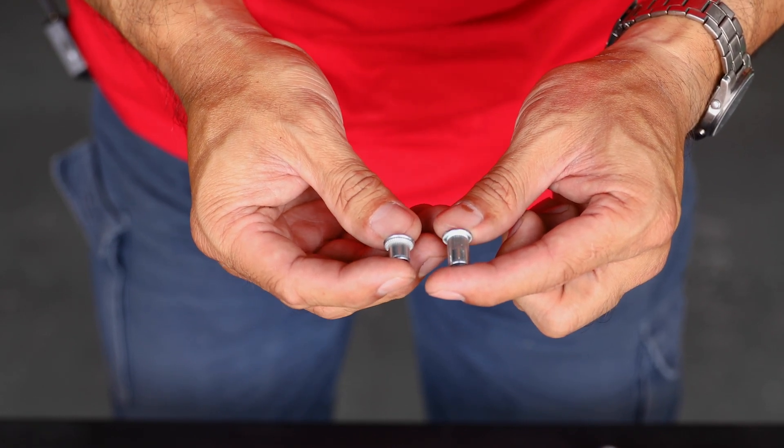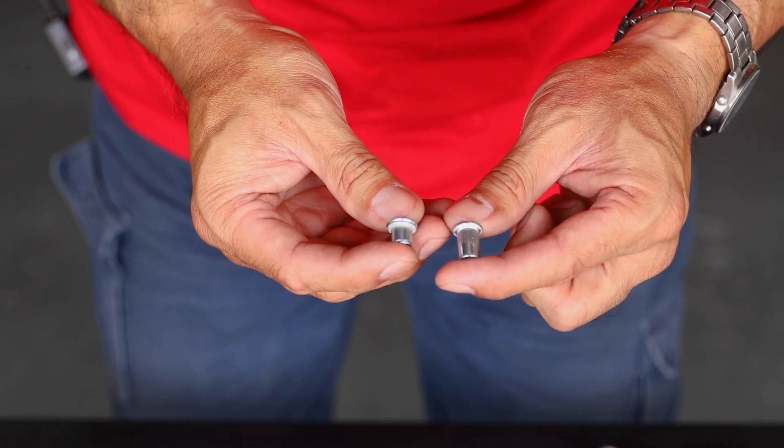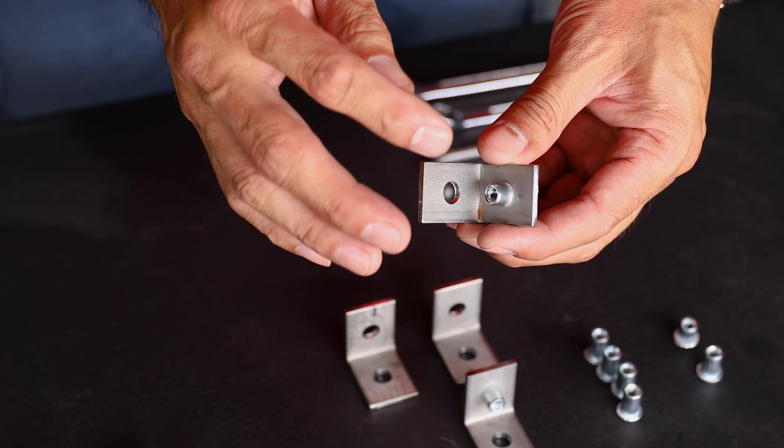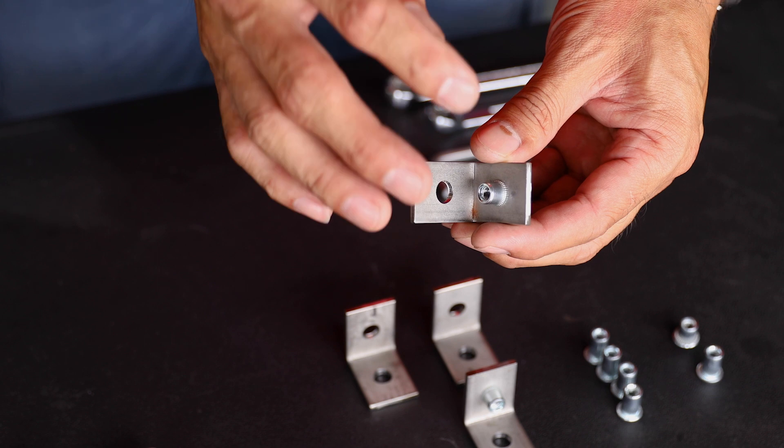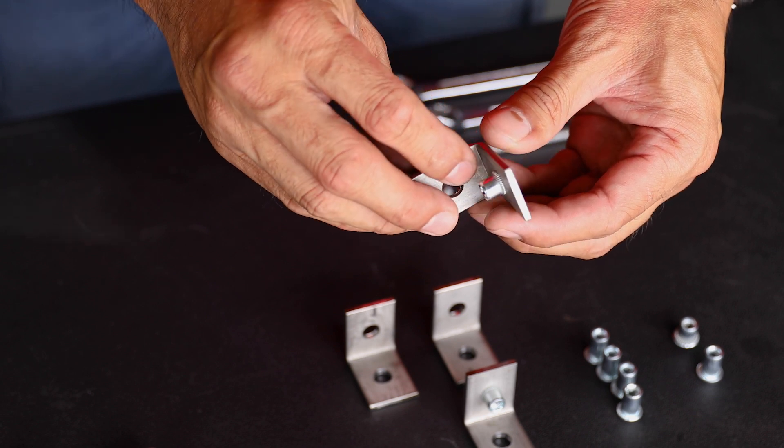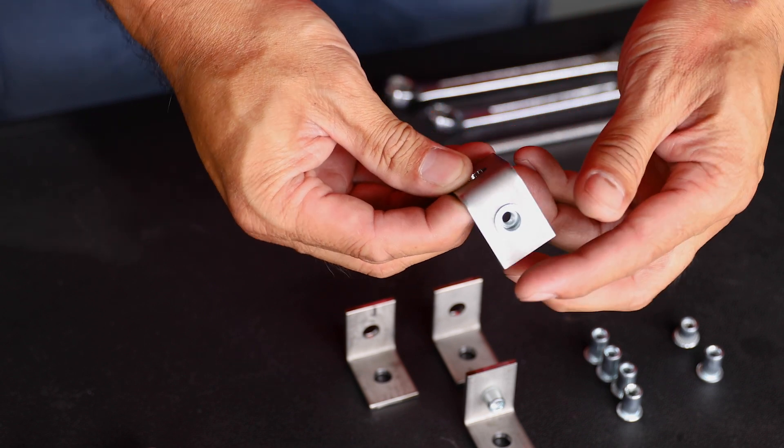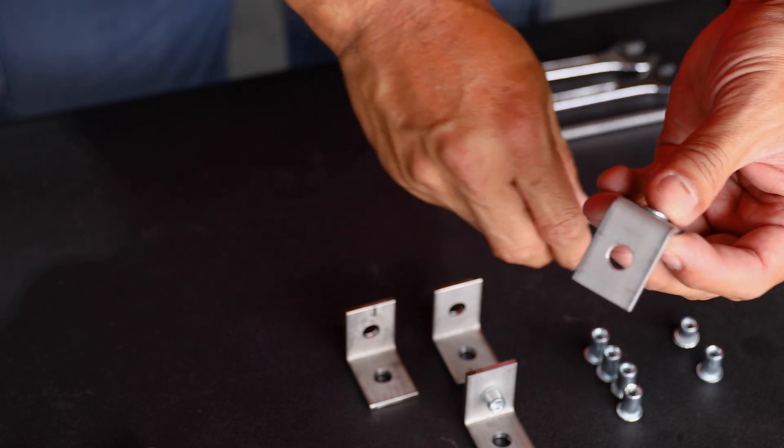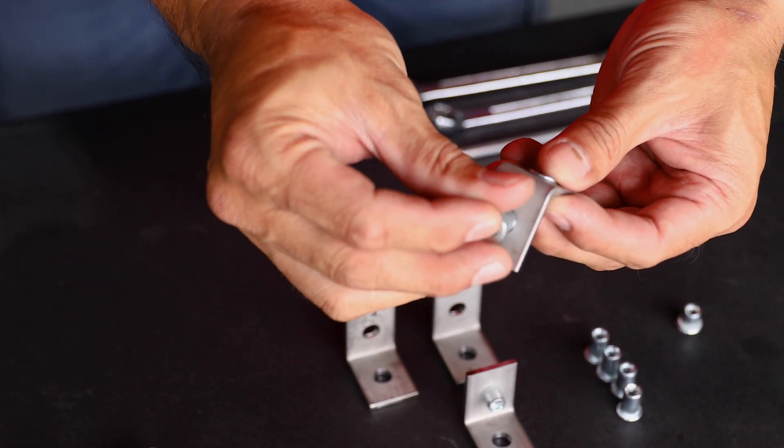So to be able to do this we need to have a tool to set the nutsert. Before we look at the tools I just wanted to show you what a properly set nutsert looks like from the back because generally you'll only see it from the front. So here is the hole that you need to put the nutsert in.